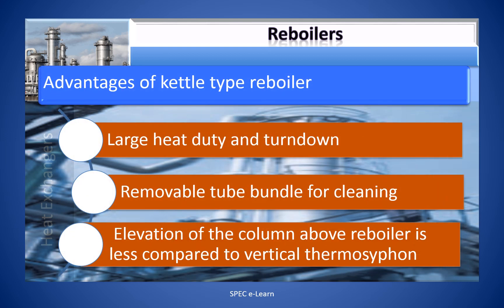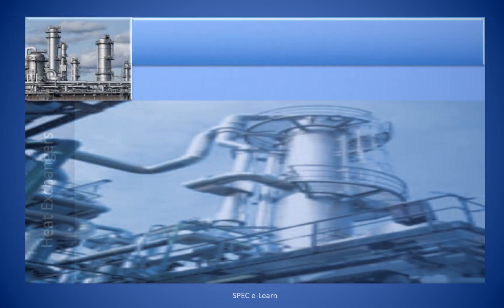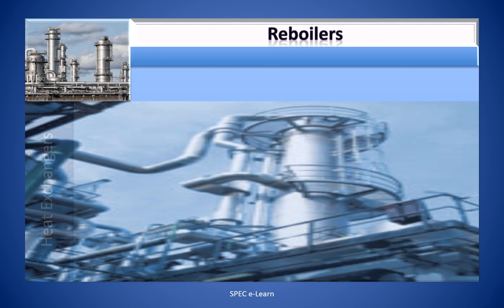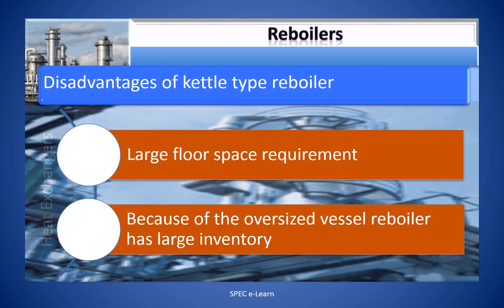The advantages of kettle type reboilers are: 1. Large heat duty and turndown. 2. Removable tube bundle for cleaning. 3. Elevation of the column above the reboiler is less compared to the vertical thermosyphon reboiler. The disadvantages are: 1. Large floor space requirement, i.e., plot area required is high. 2. Because of the oversized vessel, the reboiler has a large inventory of liquid.